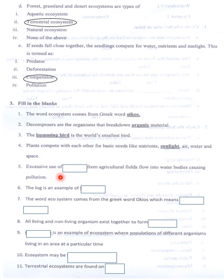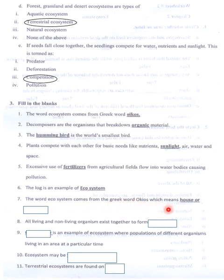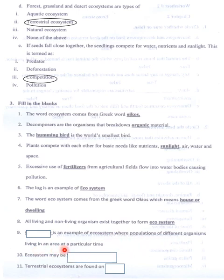Excessive use of fertilizers from agriculture fields flows into water bodies causing pollution. The log is an example of an ecosystem. The word ecosystem comes from the Greek word 'eikos' which means house or dwelling. All living and non-living organisms exist together to form an ecosystem. A community is a population of different organisms living in an area at a particular time.